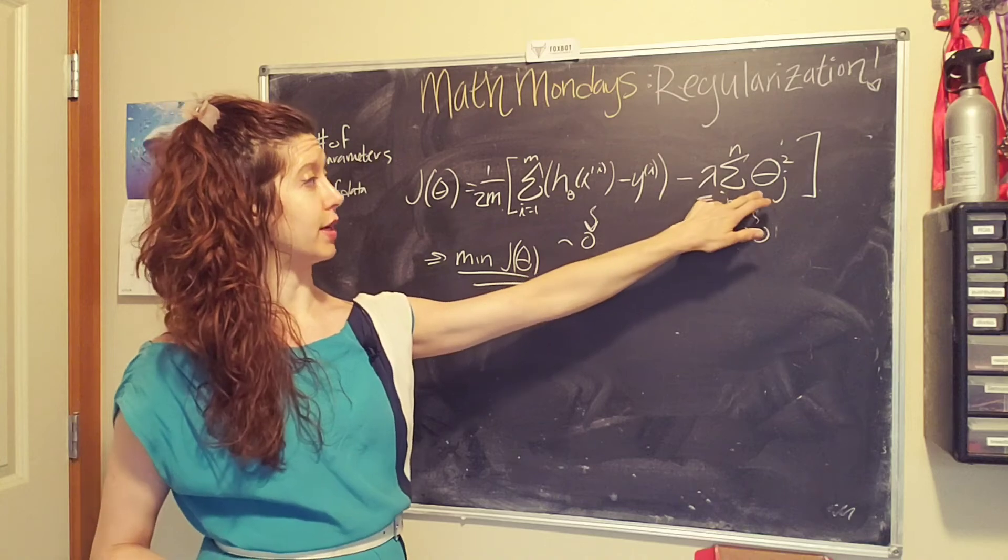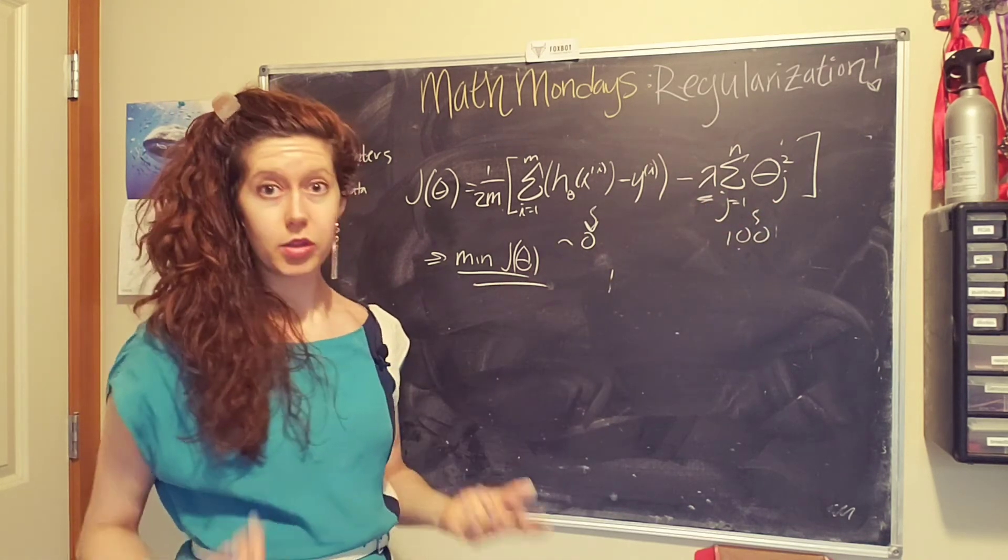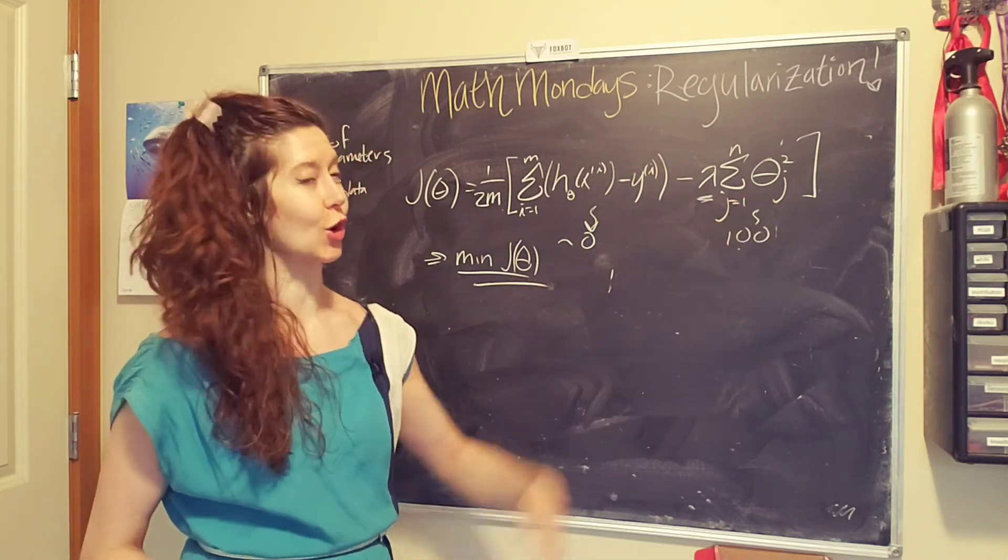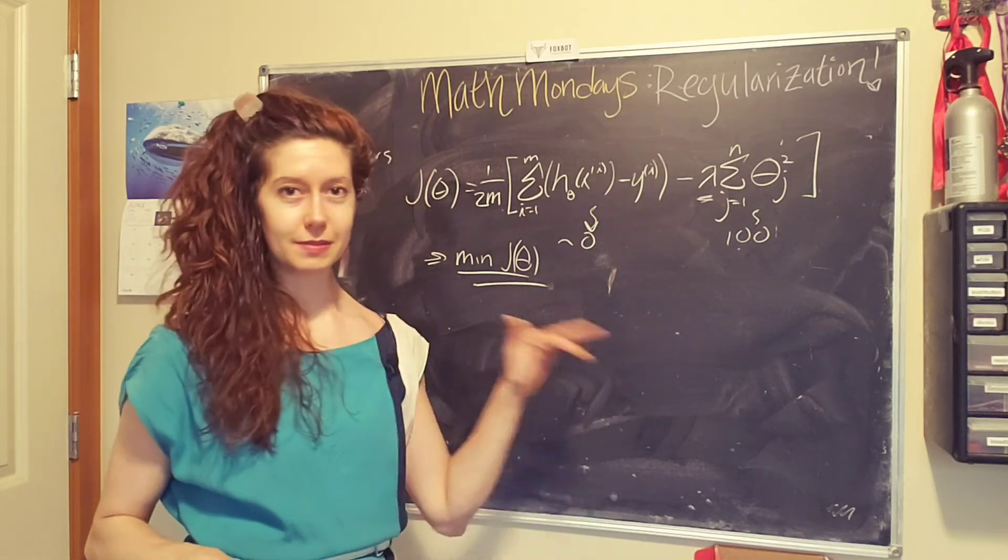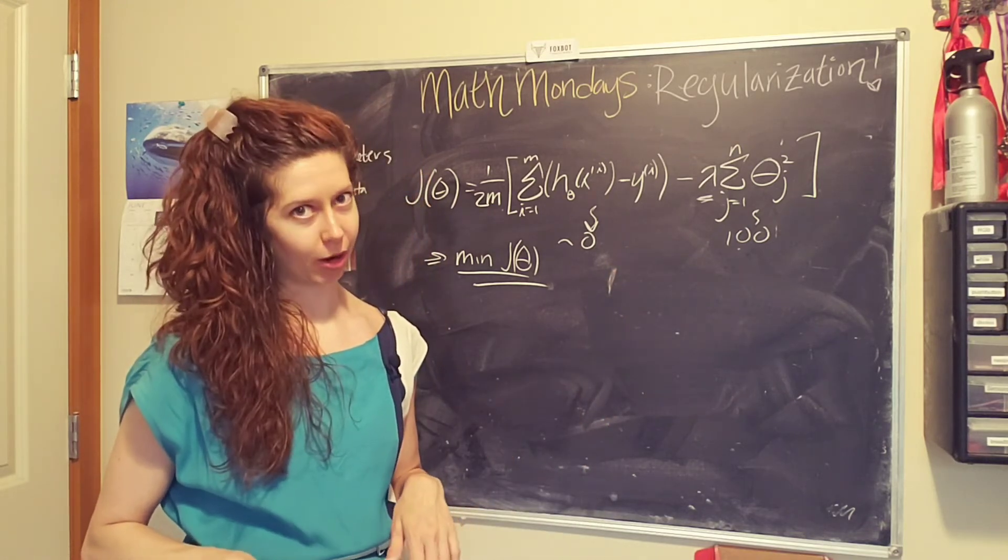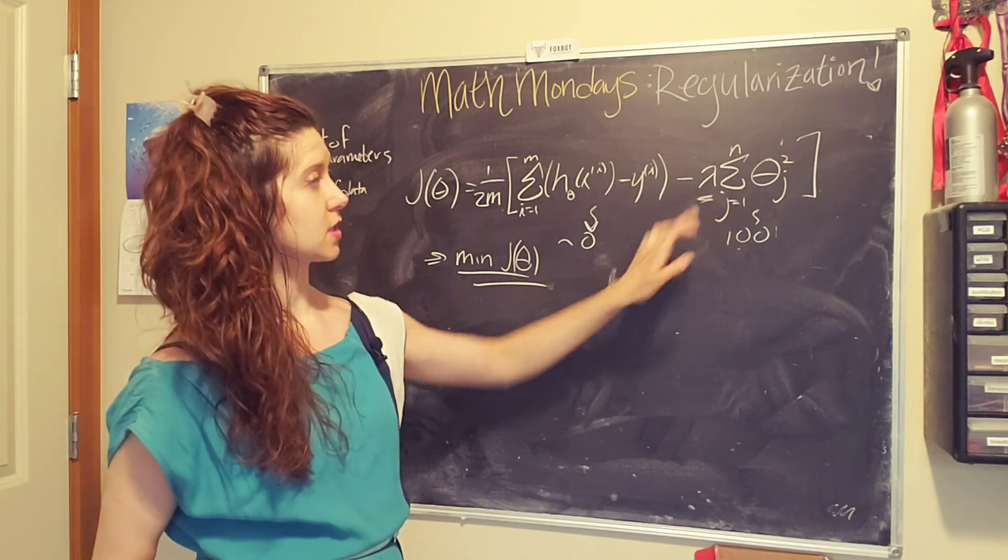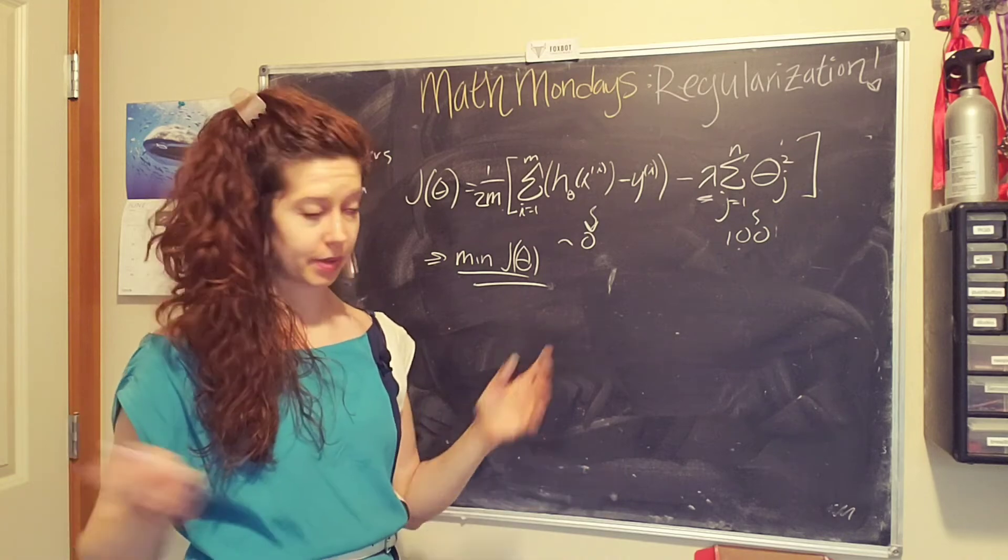We want to avoid making this too large because if this is really big when these are small, we're still going to have a very high penalty. And so what we'll end up with most likely is a straight line where basically all of these terms except for theta_0 are zero. And so my flat line, boring, probably doesn't meet our data.